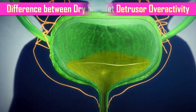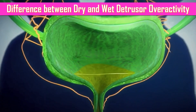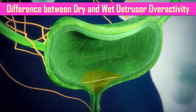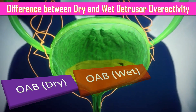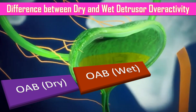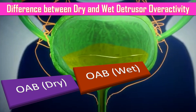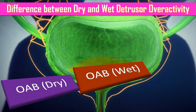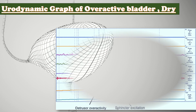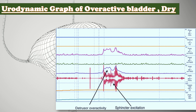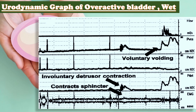What is the difference between dry and wet detrusor overactivity? There are two kinds of overactive bladder. One is without urge incontinence, which is called dry overactive bladder, and that affects two-thirds of sufferers. The second is overactive bladder with urge incontinence, which is the wet bladder. Here we have urodynamic graphs illustrating both: dry detrusor overactivity, and overactive bladder with urge incontinence meaning involuntary bladder voiding.